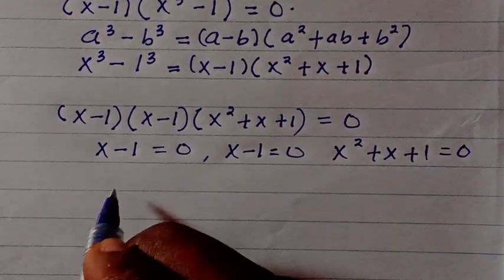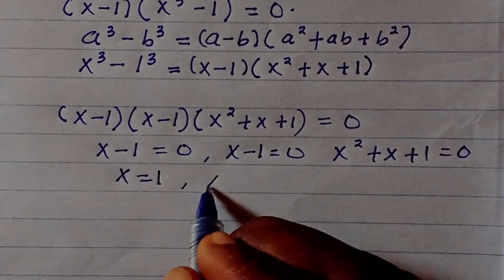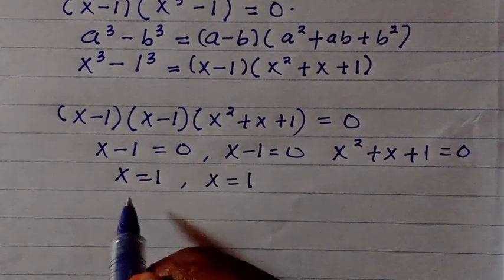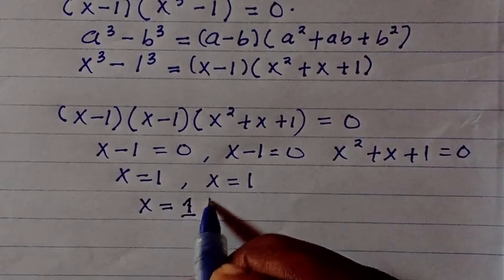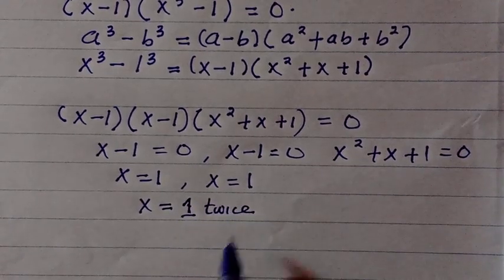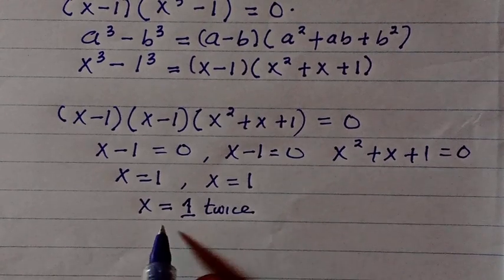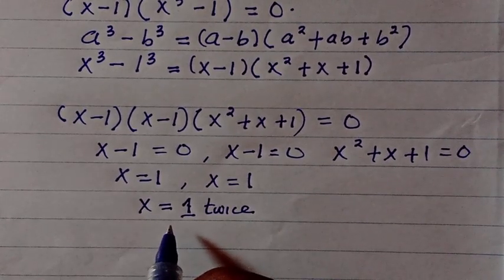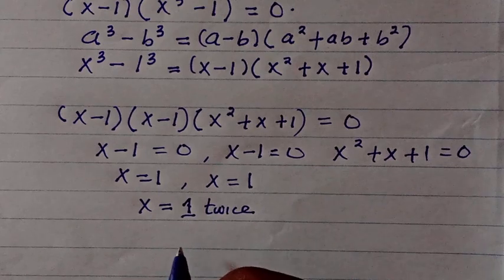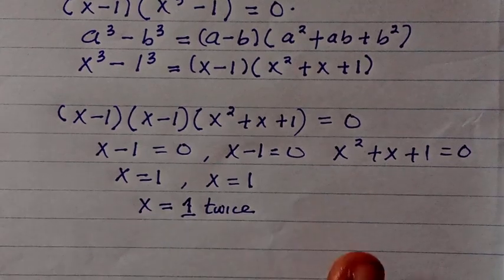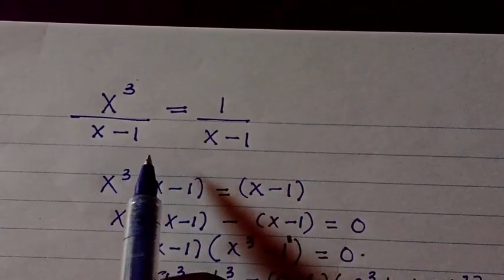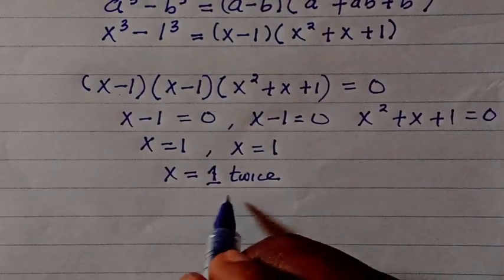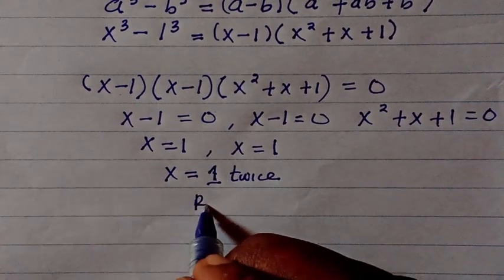Looking at these two factors, we have x equals 1 and x equals 1 again, so we can combine this as x equals 1 (twice). However, looking at this equation, the solution x equals 1 does not satisfy the problem because when we try to substitute it, we get an undefined solution. Therefore, at x equals 1 we are going to reject this.